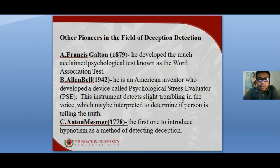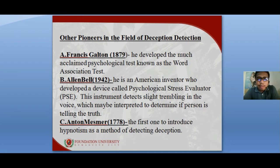Other pioneers in the field of deception detection include Francis Galton, who invented the word association test. Alfred Bell, an American inventor, developed a device called the PSE or Psychological Stress Evaluator, an instrument which detects slight trembling in the voice to determine if a person is telling the truth. Anton Mesmer, in 1778, was the first to introduce hypnotism as a method of detecting deception.